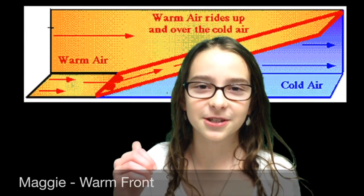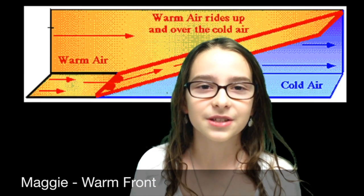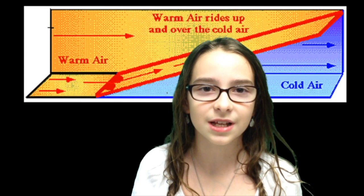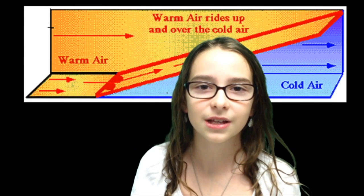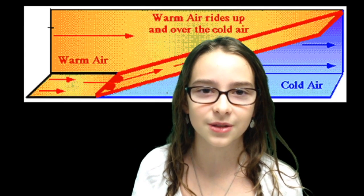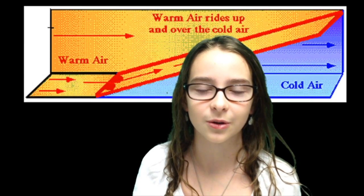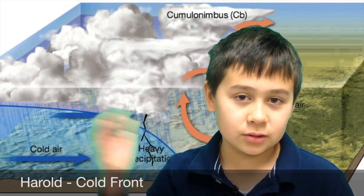Behind me is a picture of a warm front. A warm front is a fast-moving warm air mass that overtakes a slowly moving cold air mass. Because cold air is denser than warm air, the warm air moves over the cold air.